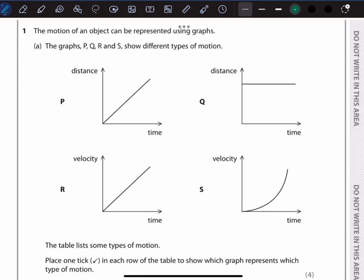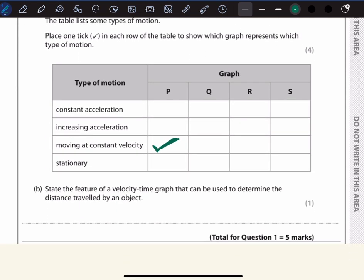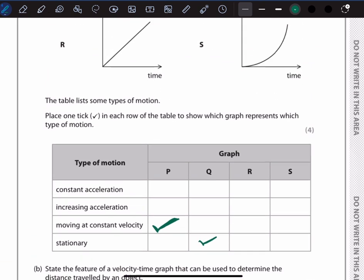For graph Q, which shows a distance-time graph, it's a straight horizontal line. What does this tell us? It means the object is stationary - no distance is being covered over time. Let me say the distance is five meters, the value of the distance is always five even as time increases. We tick stationary for graph Q.